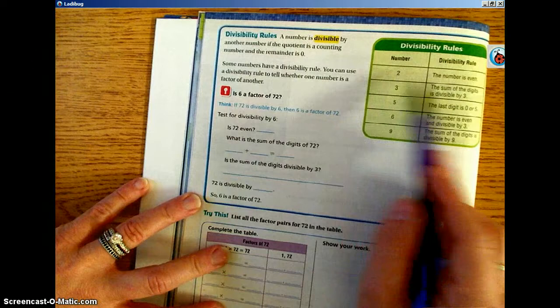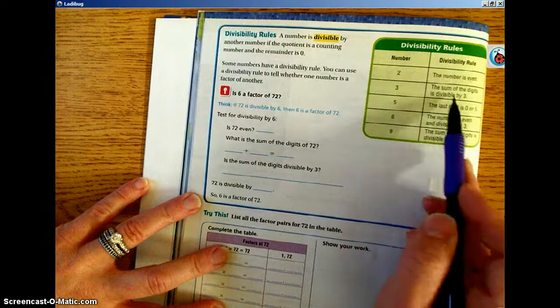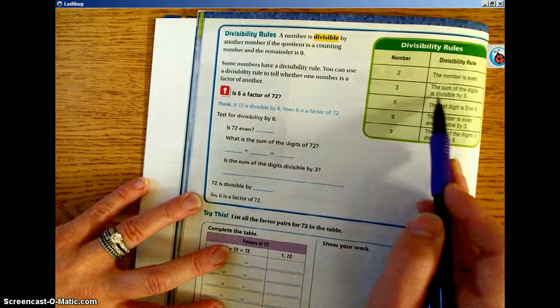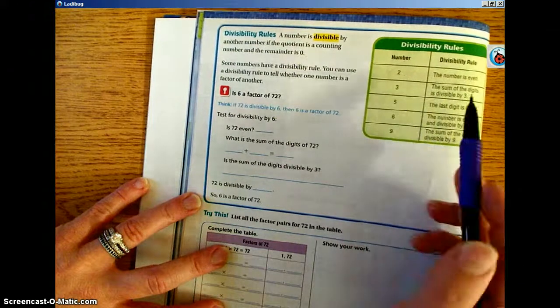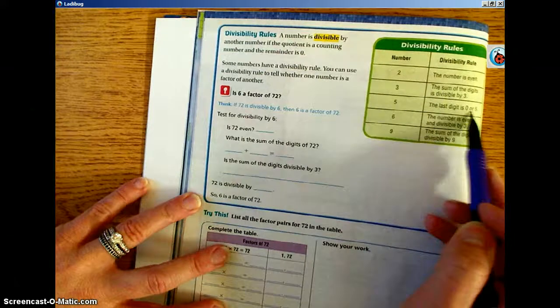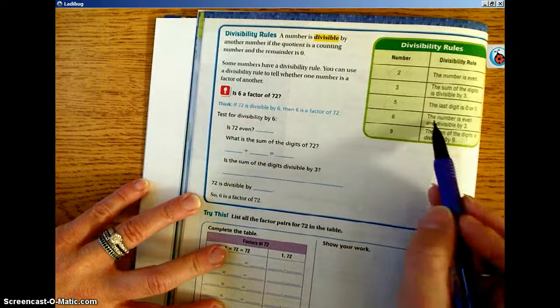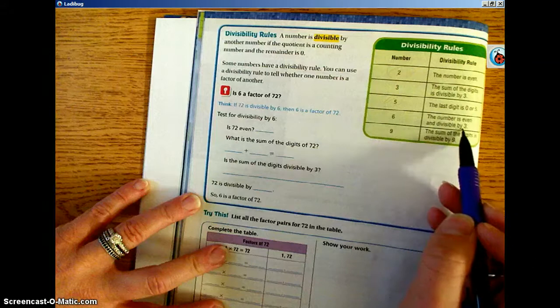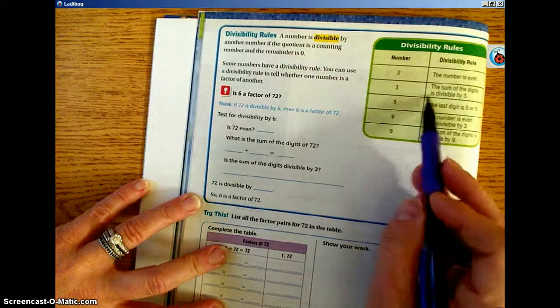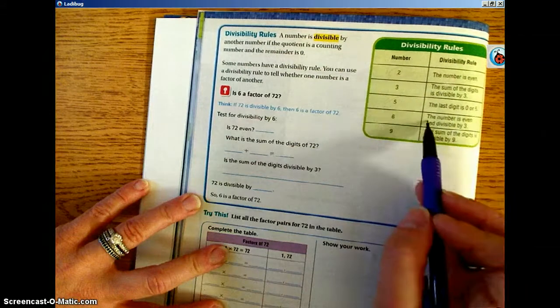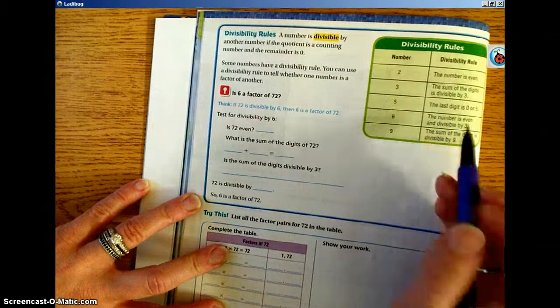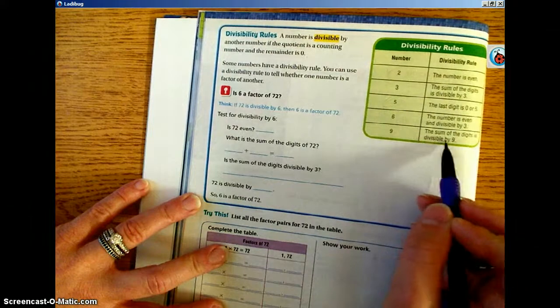A number can be divisible by 2 if it's an even number. If you add up all the digits of the number, it is divisible by 3. If the last digit is 0 or 5, it's divisible by 5. If the number is even and divisible by 3, so you would go back up here, do your 3 divisibility. And then if it's an even number, it is divisible by 6.